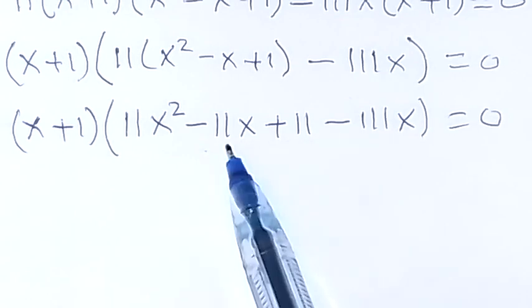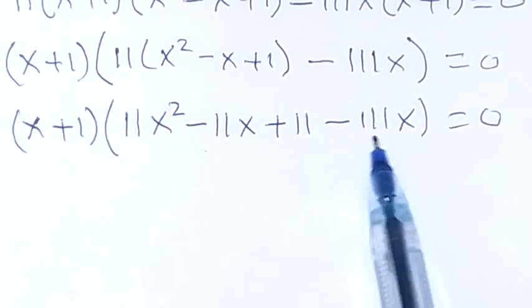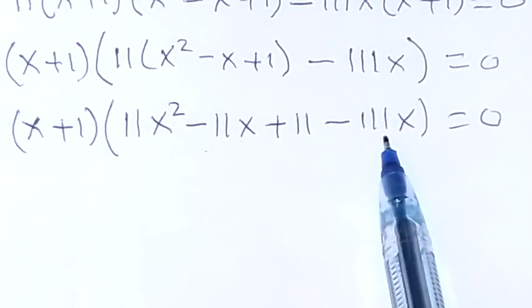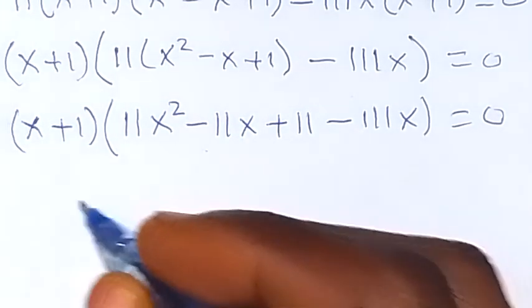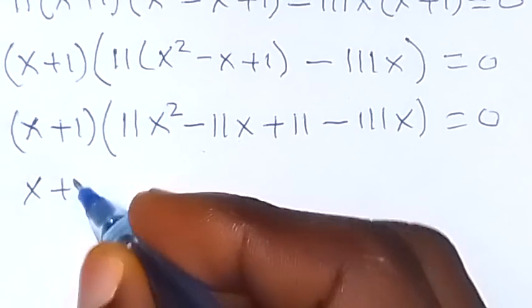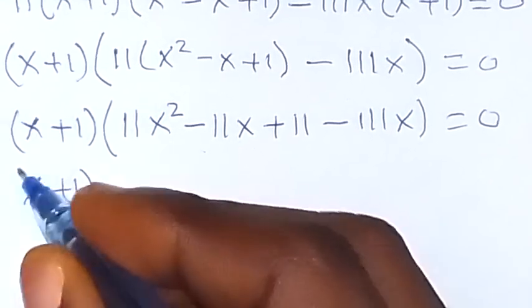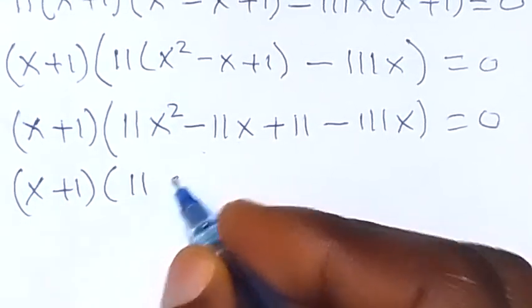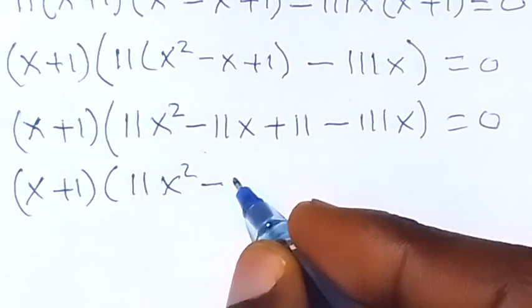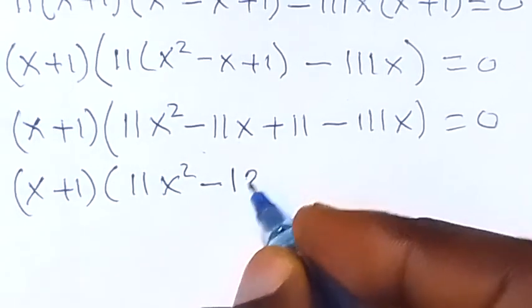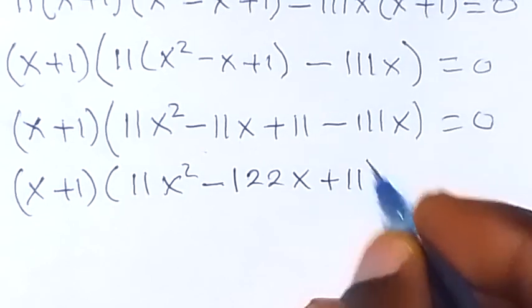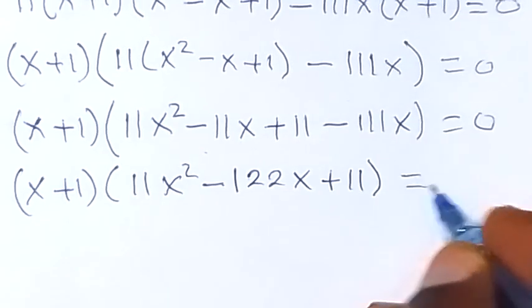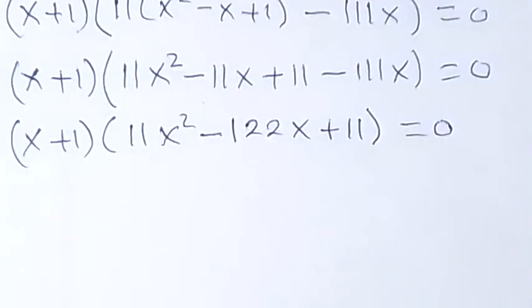Combining like terms — minus 11x minus 11x — gives us minus 122x. So we now have (x + 1) times (11x² − 122x + 11) equals zero.